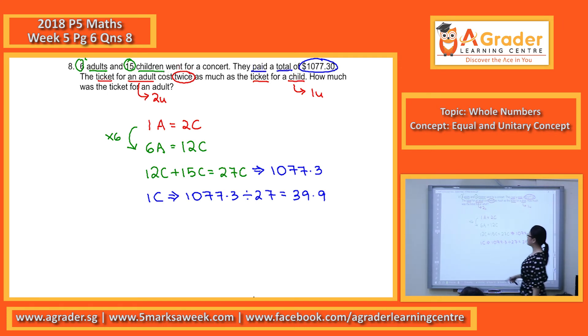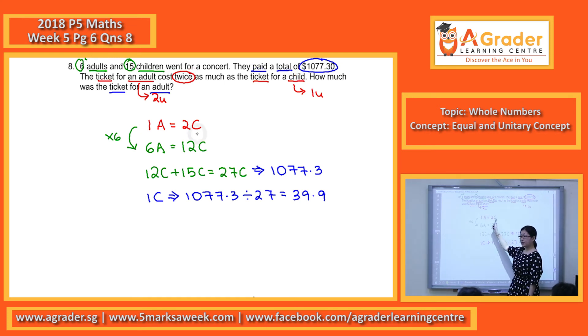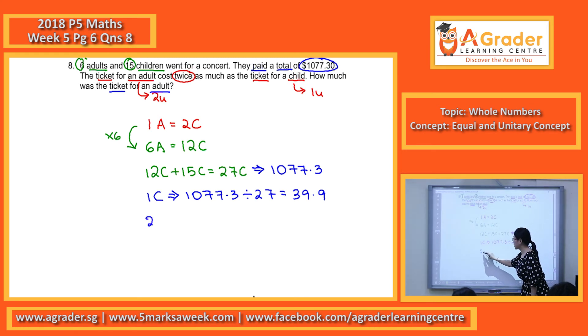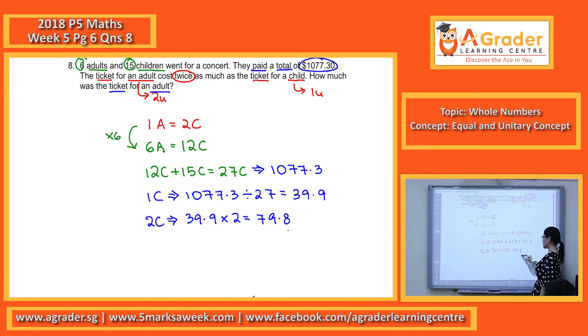But the question is asking for the ticket for an adult. So remember, based on here, the ticket for an adult means we have 2 children tickets. Okay, so we can just take 39.9 multiplied by 2 to get 79.8.